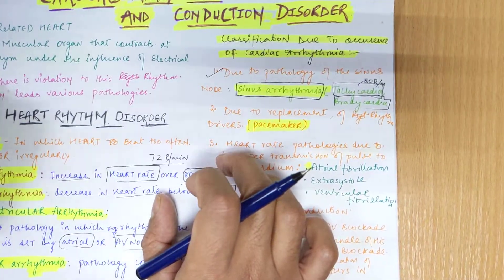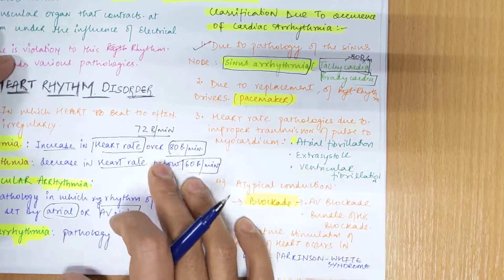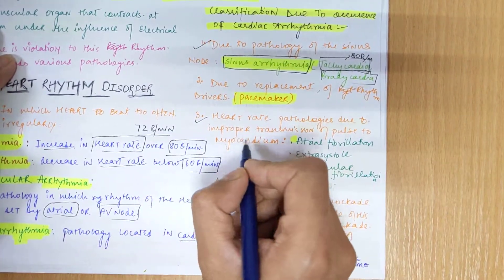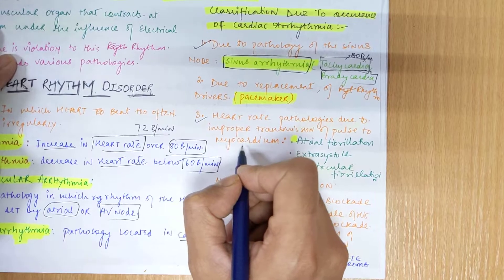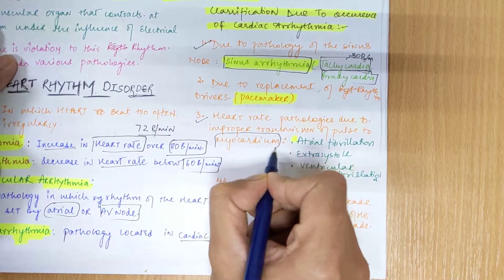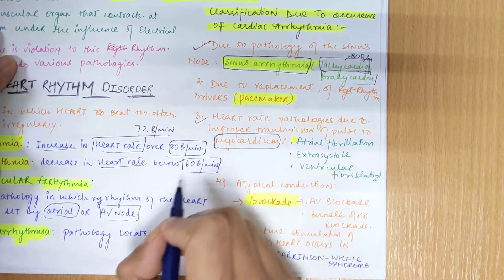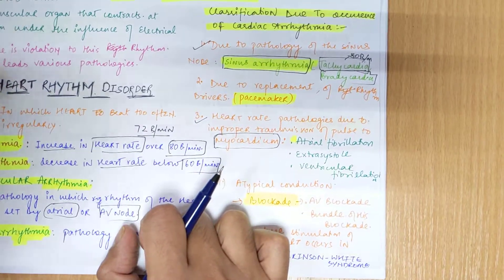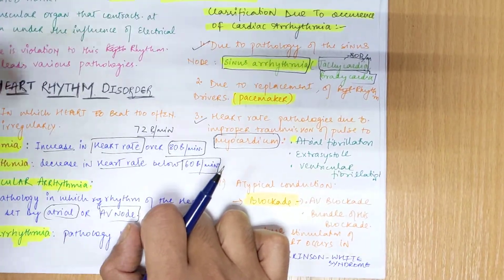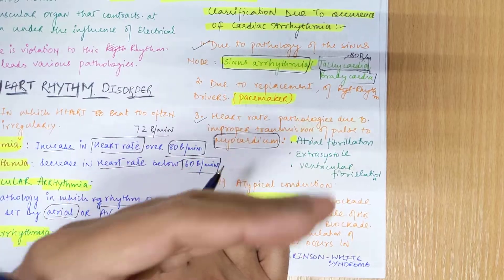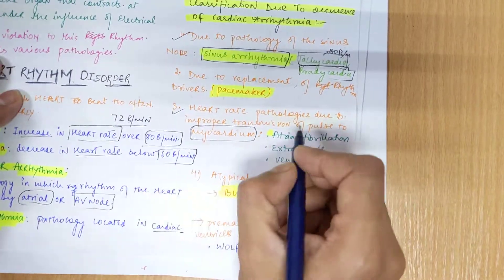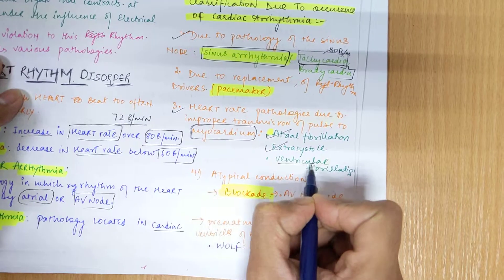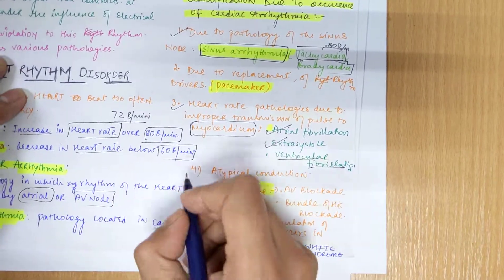If there is replacement of rhythm drivers like a pacemaker or implanted artificial pacemaker, that can also lead to cardiac arrhythmias. A third case can be pathologies due to improper transmission of the pulse to the myocardium — the middle layer of the heart. In that case we have pathologies called atrial fibrillation, extrasystole, and ventricular fibrillation.